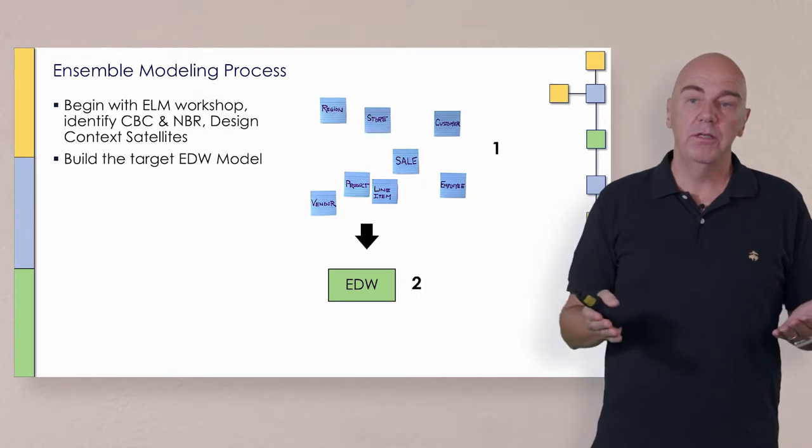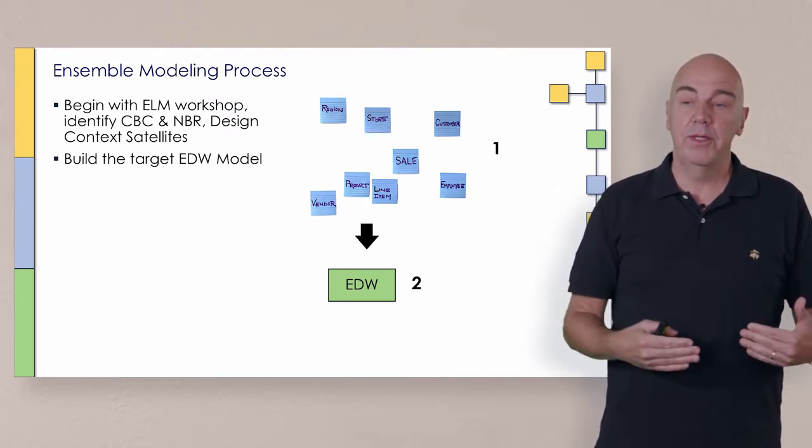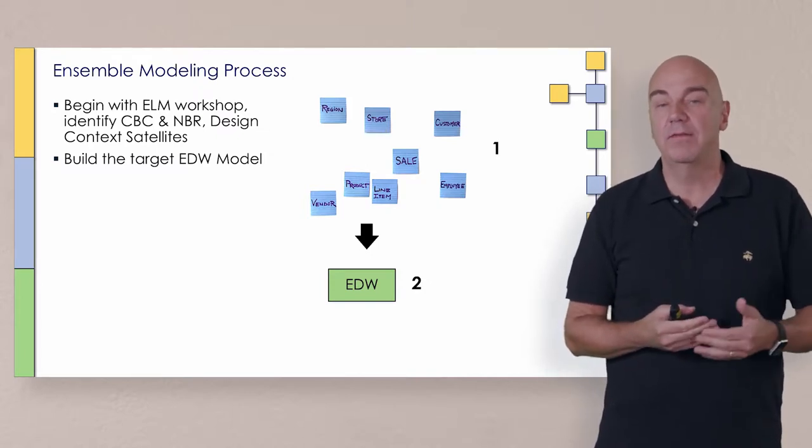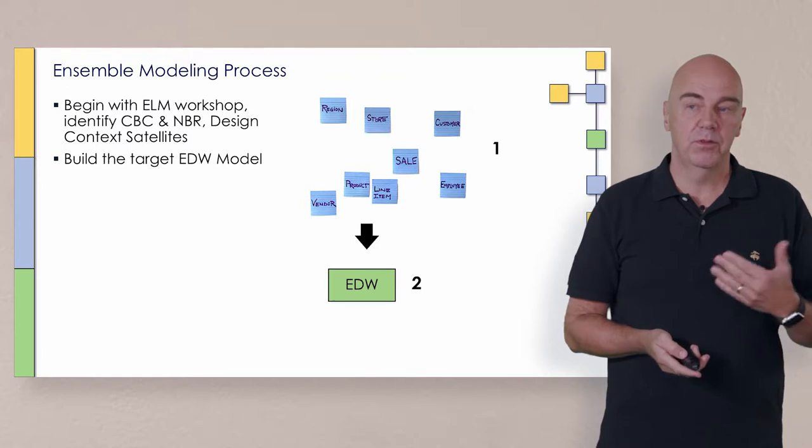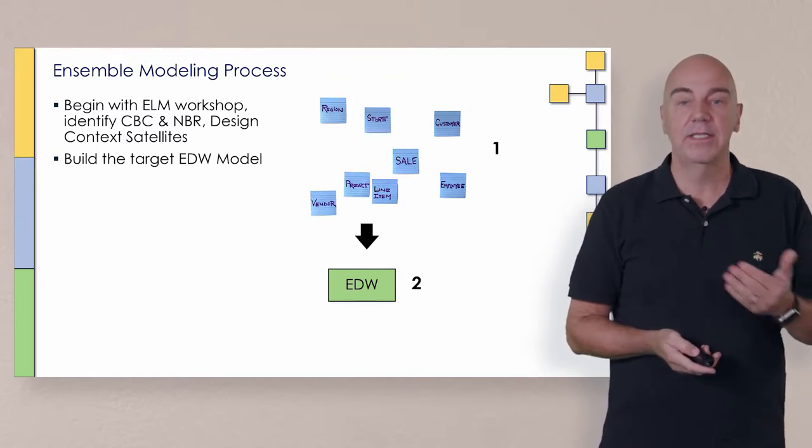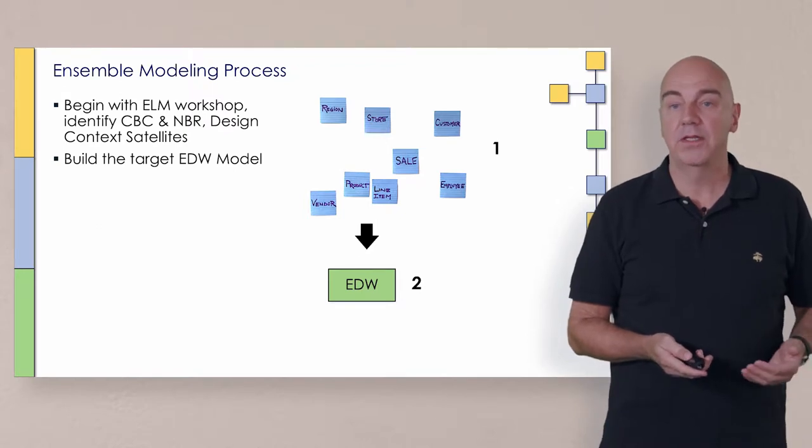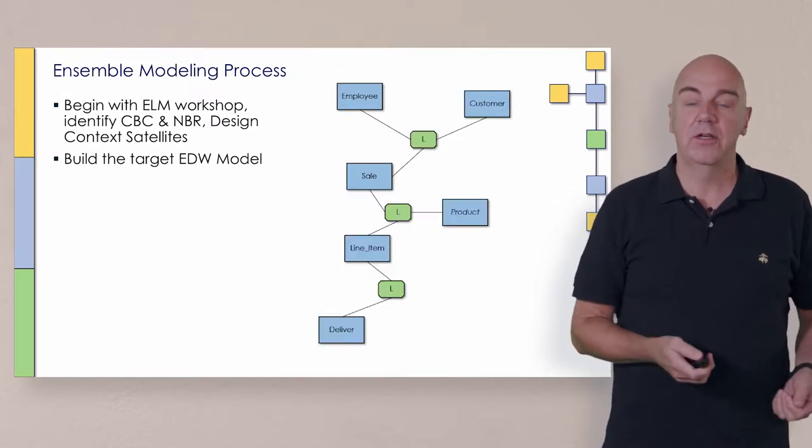With that being said, let's jump into the ensemble modeling process. Number one, Elm Workshop, CBC, and NBR. We build the target model, and that's the enterprise warehouse where everything should arrive. That's the two-step process to get to where we are now, which is building the target database for the enterprise data warehouse or the integration layer.